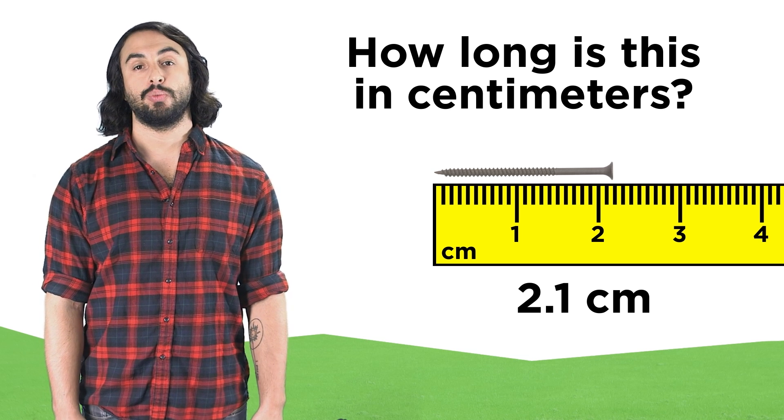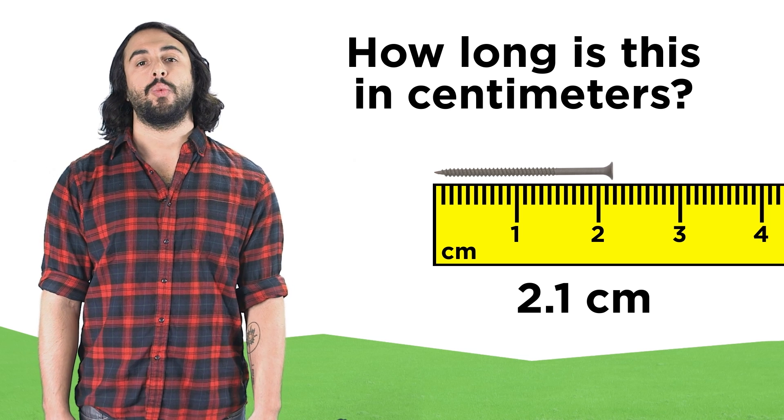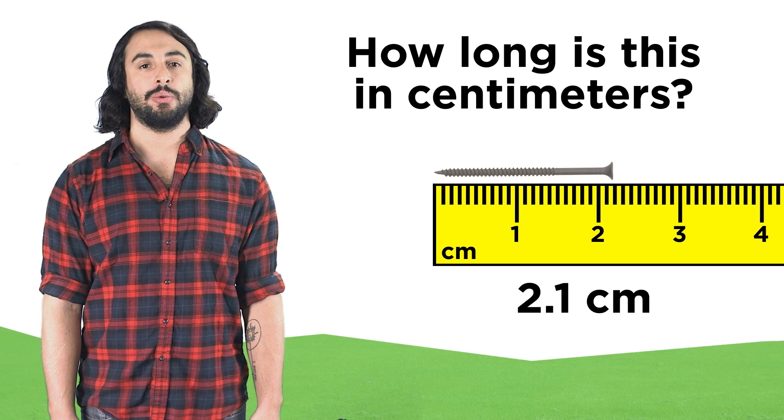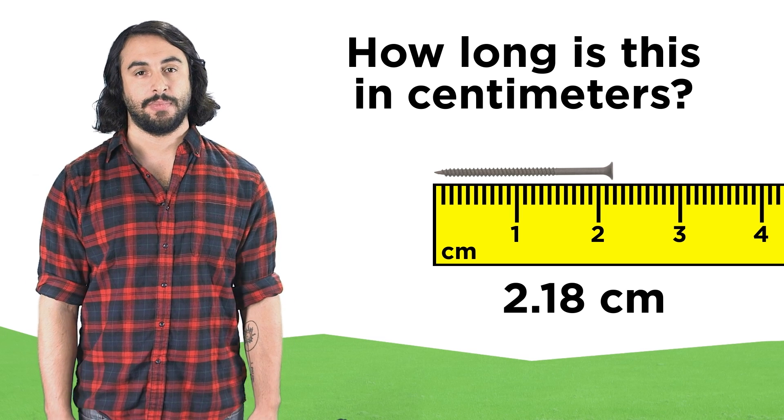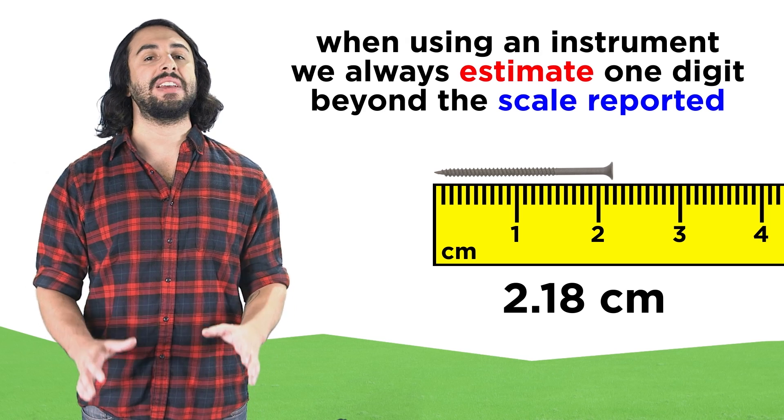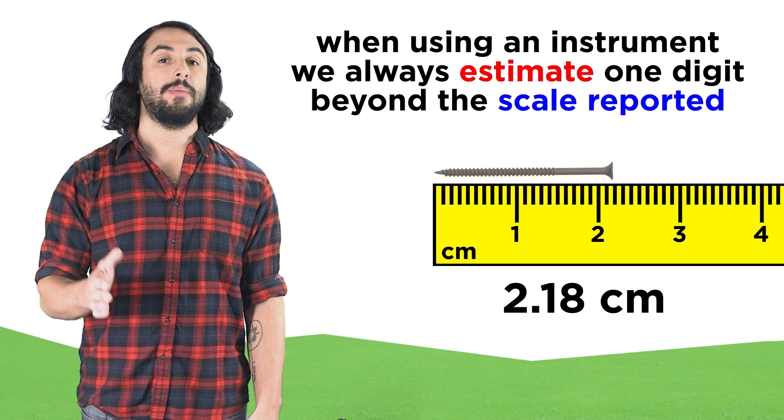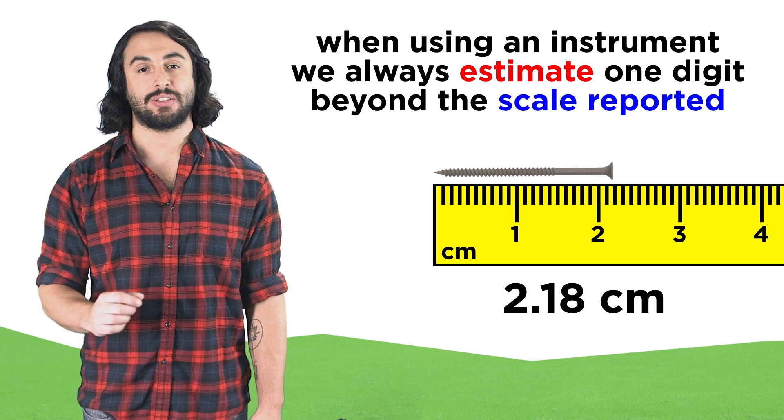Let's say that the ruler also showed tenths of a centimeter. Then we could reliably report our value to the tenths place, and now estimate the hundredths place. This is because when taking measurements, we always estimate one digit beyond the scale that is reported on the measuring instrument.